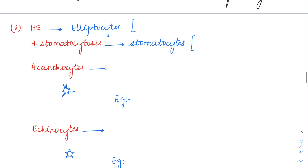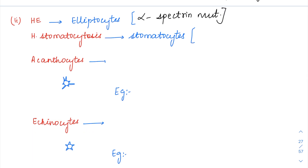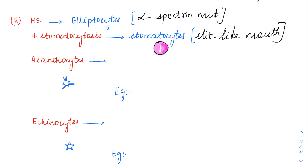Next is hereditary elliptocytosis — as the name suggests, elliptocytes are formed in the peripheral smear and the mutation is alpha spectrin mutation. Hereditary stomatocytosis involves formation of stomatocytes — stomata means mouth-like. In the RBC, the pallor has just a slit-like appearance rather than a central one-third pallor; this slit-like pallor looks like a mouth — this is the characteristic appearance in hereditary stomatocytosis.